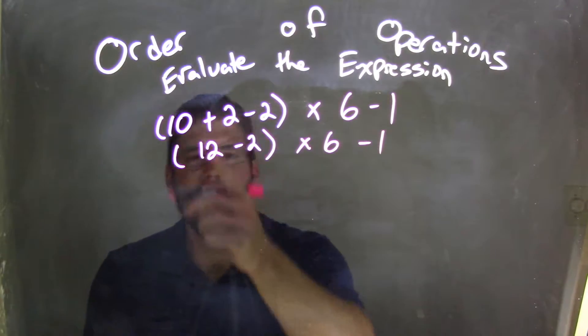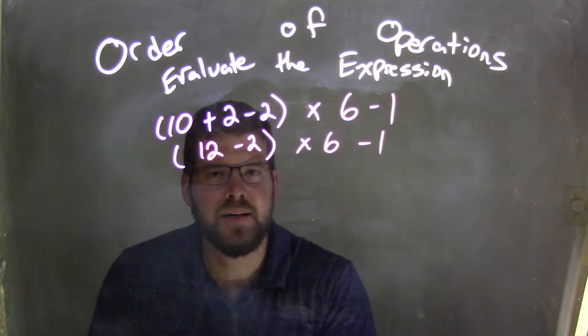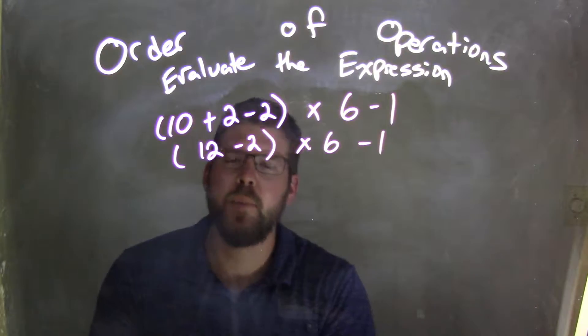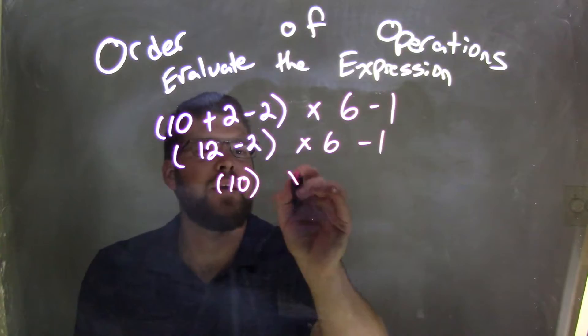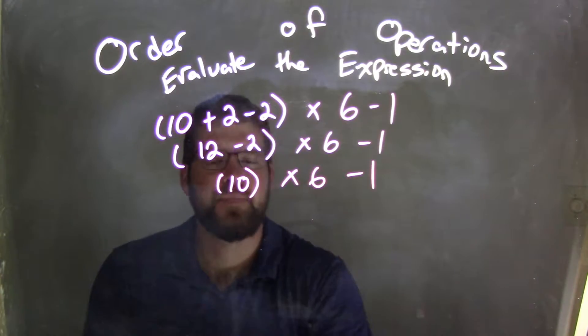Well, again, in parentheses, I need to simplify it a second time. 12 minus 2 comes out to be 10, and again, we just bring down what's left to the right.